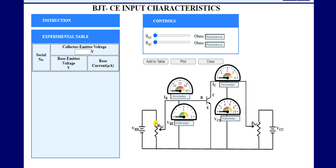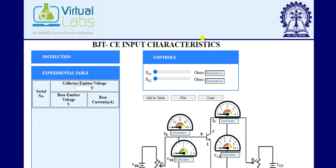There are two bias voltages, VBB and VCC. There are two resistances RH1 and RH2 to control or change the value of input current and output current. On the left-hand side, there is a list of instructions which we have to follow for the simulation of this practical.